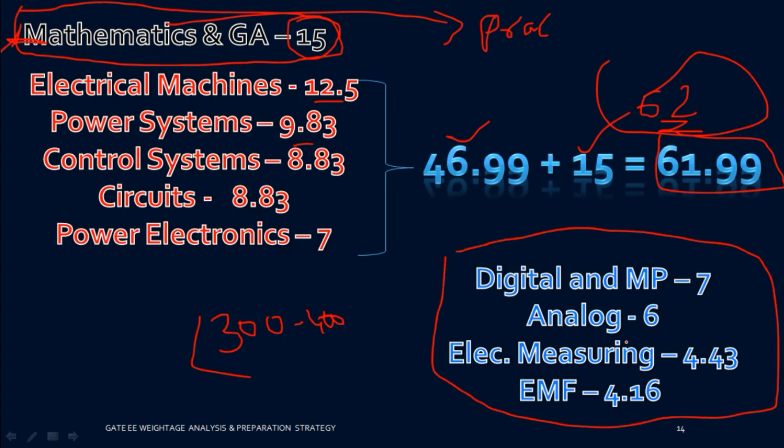Core Electrical Engineering subjects are more important than Electronics. The subjects requiring the most practice are Mathematics, Control Systems, and Circuits. For Electrical Machines, be thorough — Transformers and Induction Machines are the most important parts. For Power Systems, study stability, voltage control, load flow, transmission line parameters, and generation economics including load curves, load factor, and demand factor. Previous year questions are very helpful for these topics.